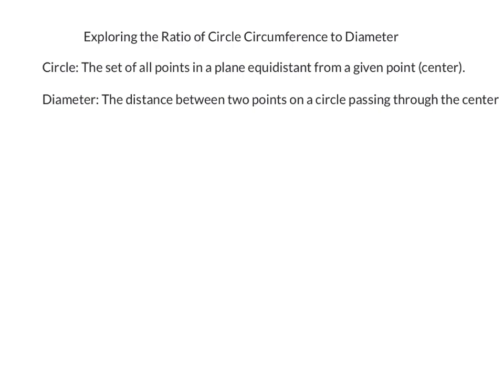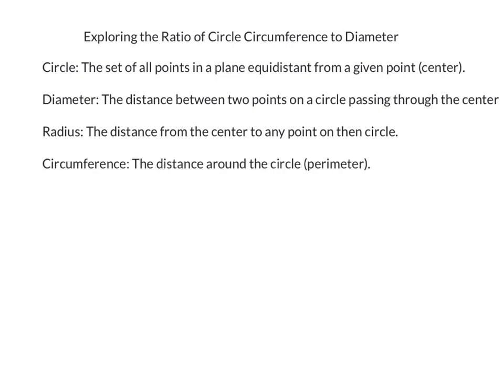Next is radius, which is the distance from the center to any point on the circle, or really all the points on the circle. And circumference. Circumference is the distance around the circle. It's another word for perimeter. It's a word specific to circles, perimeter of a circle.